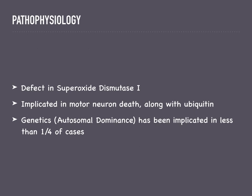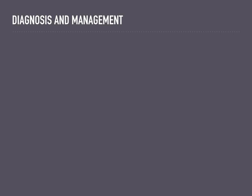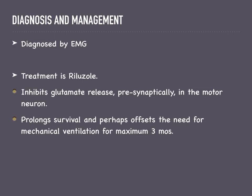Genetics has been implicated in less than one-fourth of ALS cases. For diagnosis and management, it is diagnosed by EMG. There is a drug called riluzole which inhibits glutamate release presynaptically in the motor neurons, and it is used to prolong survival and offset the need for mechanical ventilation.